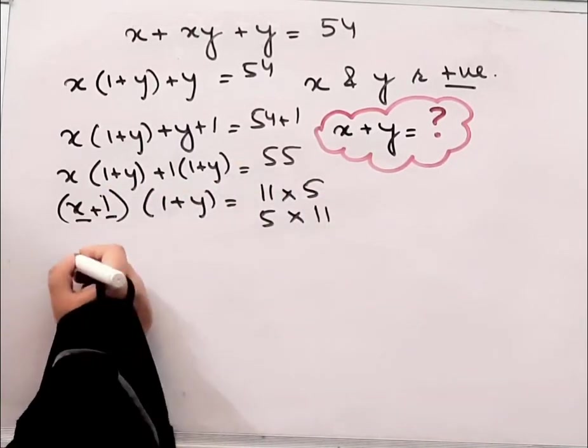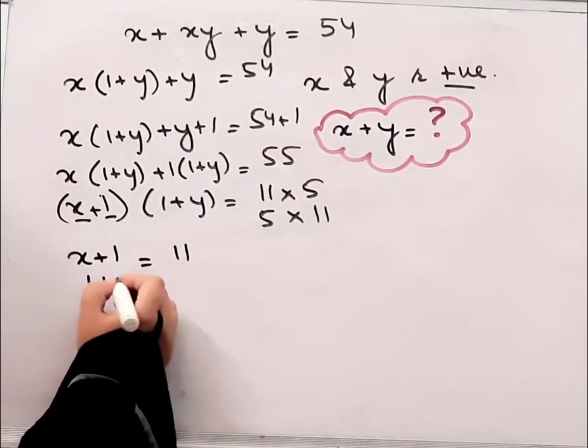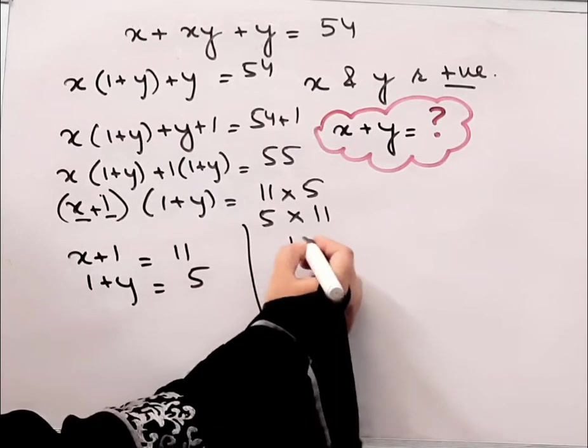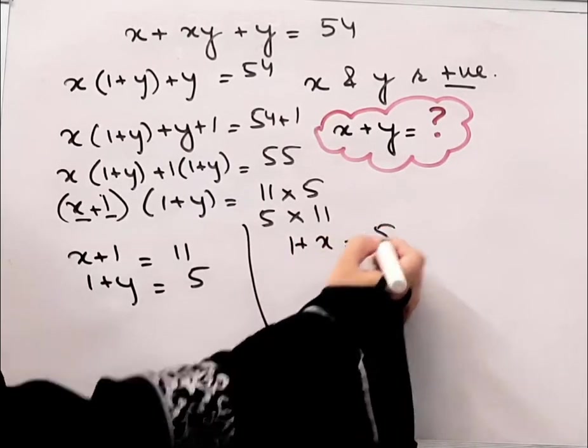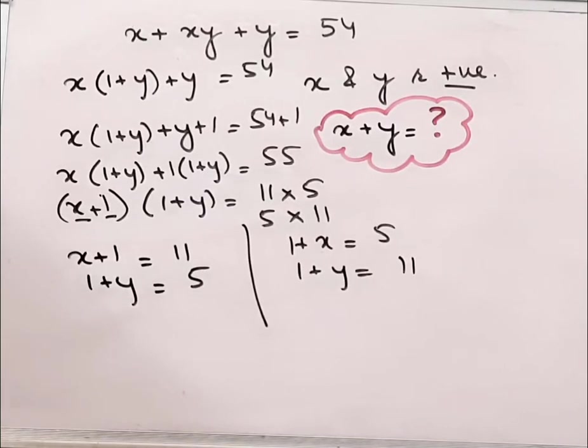We will take these two factor pairs. x plus 1 equals 11 and 1 plus y equals 5, or x plus 1 equals 5 and 1 plus y equals 11.